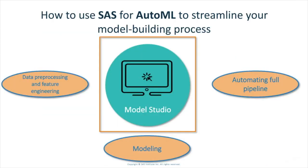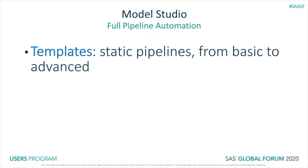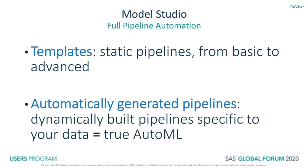Next, we're going to talk about complete pipeline automation — true AutoML. Similar to Rapid Predictive Modeler for SAS Enterprise Miner, Model Studio offers a library of templates that contains static pipelines to help you get started, from basic to advanced pipelines for building a predictive model. But new in SAS Visual Data Mining and Machine Learning 8.5 is an option to automatically and intelligently generate a pipeline that is optimized specifically for your data and built in a dynamic fashion.